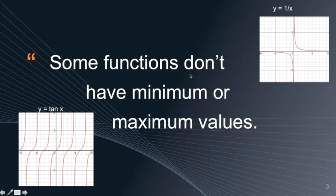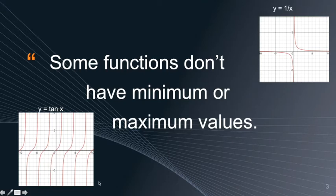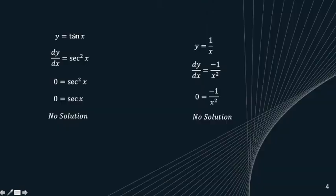Both of these functions are asymptotic. Near the asymptote the function goes to positive infinity, so there is clearly no maximum value. On the other side it goes to negative infinity, so there is no minimum value either — the same thing applies to y = 1/x.